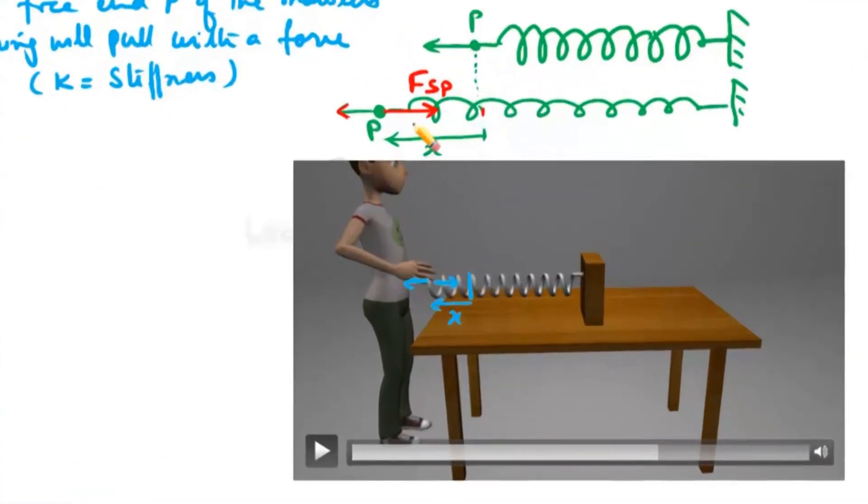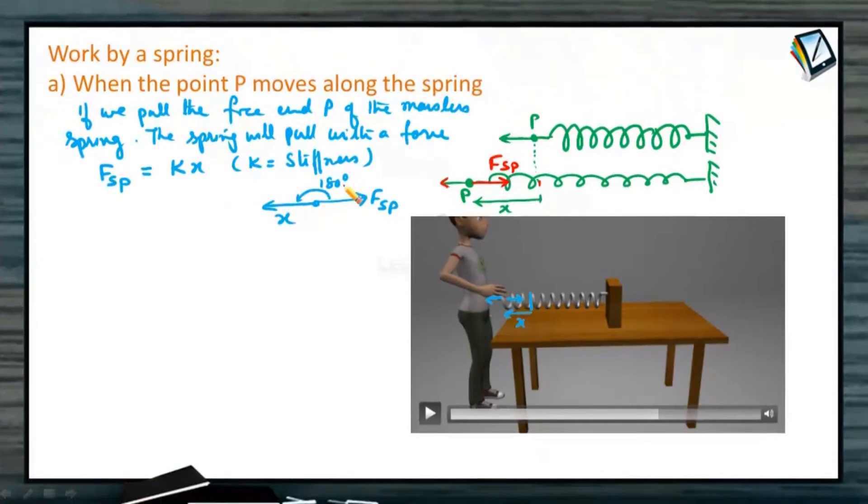If you check the direction of the spring, the force due to the spring is Fsp, and the displacement, because we applied an applied force, is in this direction. Angle between the force and the displacement is 180 degrees.